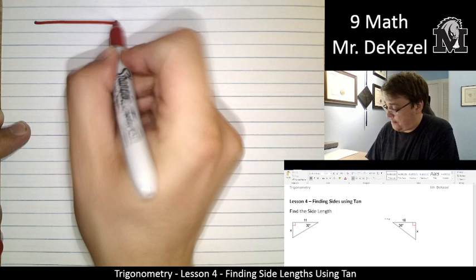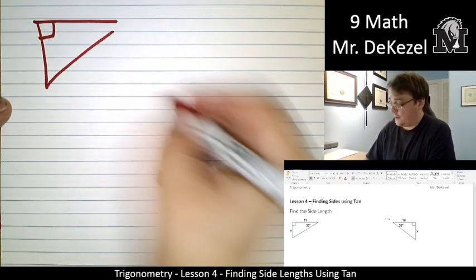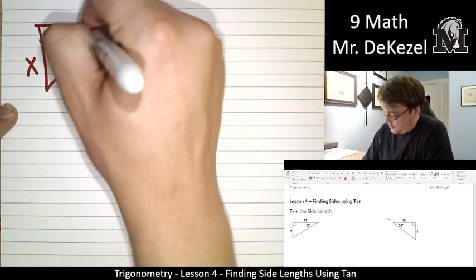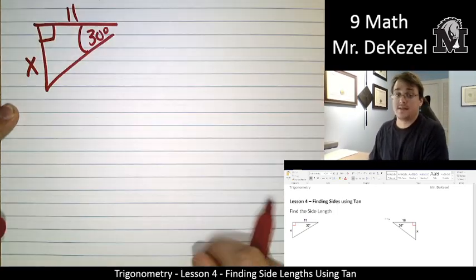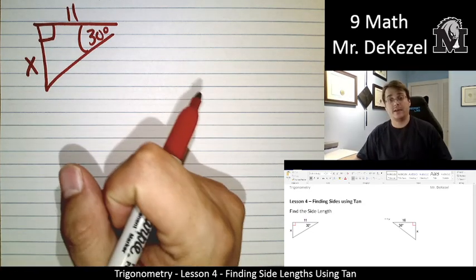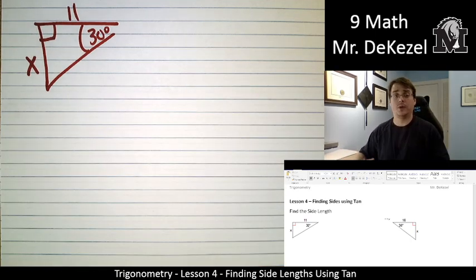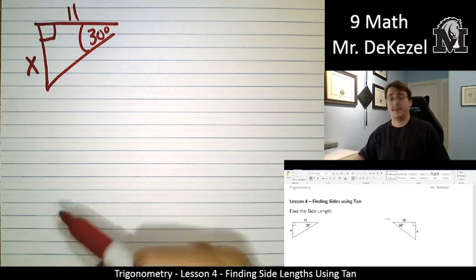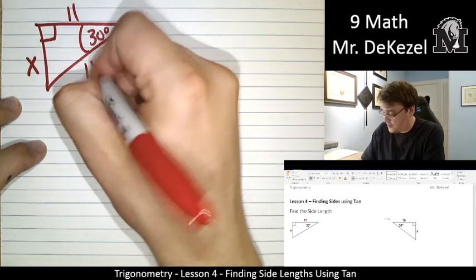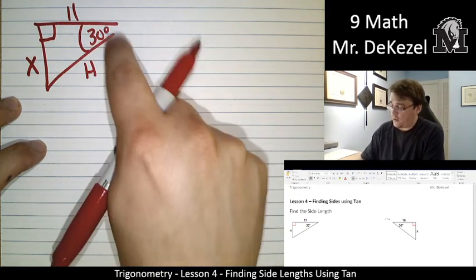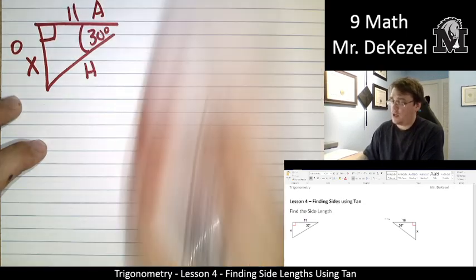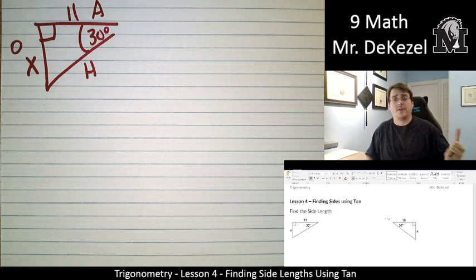We have a triangle with a right angle, X which means that side is unknown - that's what we're going to be looking for. This is 30 degrees and this is 11. So the angle that we know that is not the right angle, that is going to be our angle of interest. We are going to label sides based on the angle we have. First, across from the right angle is always the hypotenuse, so write that as H. From the angle of interest, across from it is opposite and next to it is adjacent.